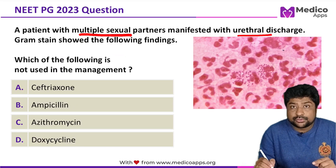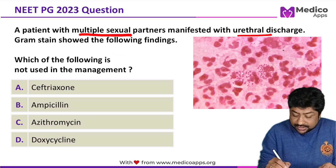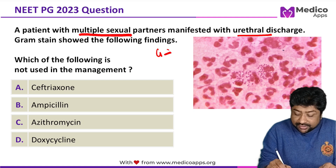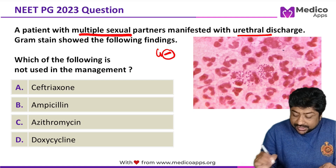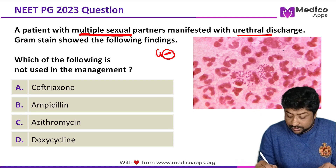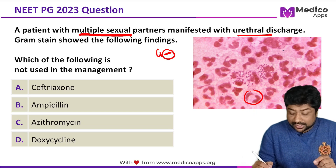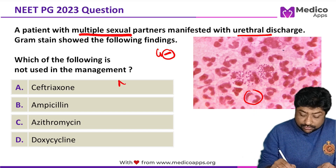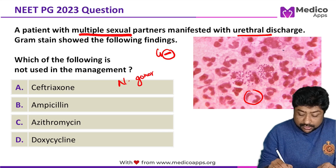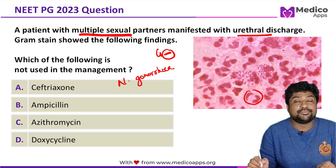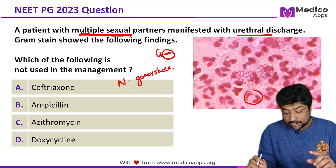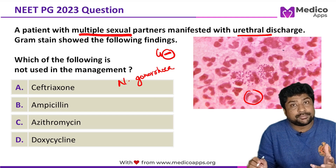Looking at the gram stain, it is very clear — we can see gram-negative intracellular diplococci. Gram-negative intracellular diplococci is what we can see, so our diagnosis is very clear: we are talking about a case of Neisseria gonorrhea. Now, what should not be used in the management of this case?